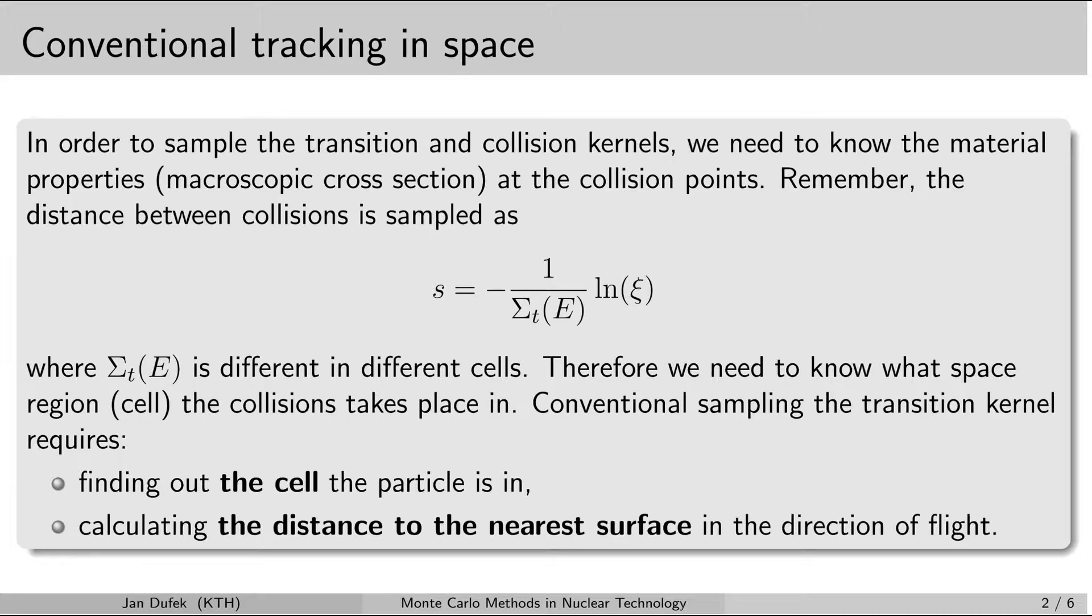We also learned that this formula could be applied directly only for homogeneous systems. In case that the system contains a number of cells with different materials we have interfaces between the different cells, and when the neutron travels across these interfaces we cannot directly apply this formula for sampling the distance to the next collision.